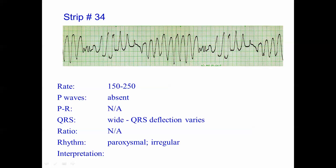The ratio is not applicable because we don't have P waves. The rhythm is irregularly irregular and tends to happen in paroxysms. Patients may experience paroxysmal bouts of torsade de pointes that may last 15 to 20 seconds in length and may have seemingly benign signs and symptoms, or they may have a sustained torsade de pointes.